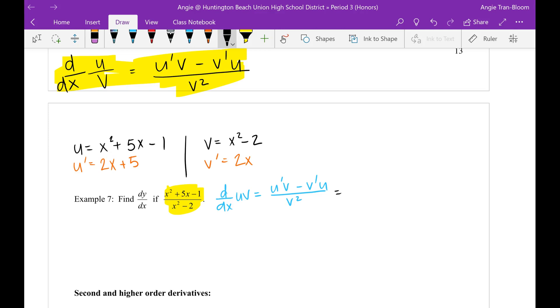So let's just apply the formula. Here we go. u prime is this guy right here, so that's going to be 2x plus 5. v, regular v, is this guy right here, so that's going to be x squared minus 2. Subtract v prime is this guy right here, so that's 2x. I'm sorry, subtract v prime times u.